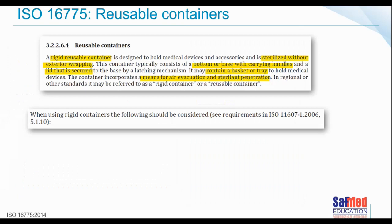ISO 16775 states that a reusable container is designed to hold medical devices and accessories and is sterilized without exterior wrapping. The container typically consists of a bottom or base with carrying handles and a lid secured to the base with a latching mechanism. It may contain a basket or tray to hold the medical devices, and the container incorporates a means for air evacuation and steam penetration — some form of holes or system that allows air out and sterilant in.